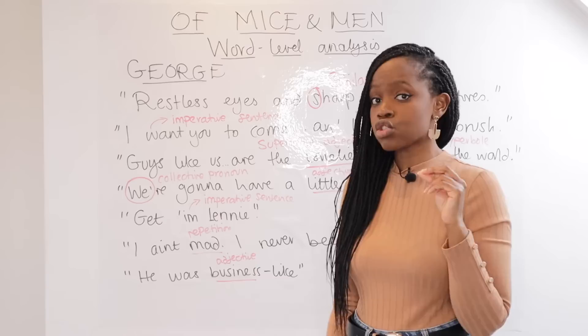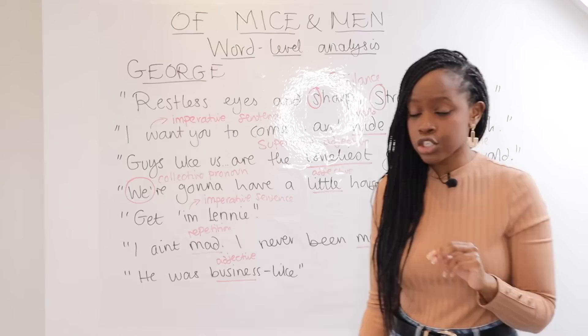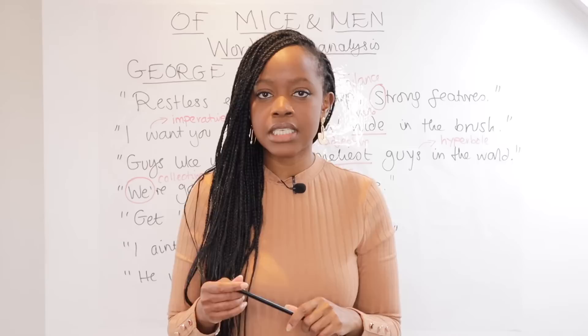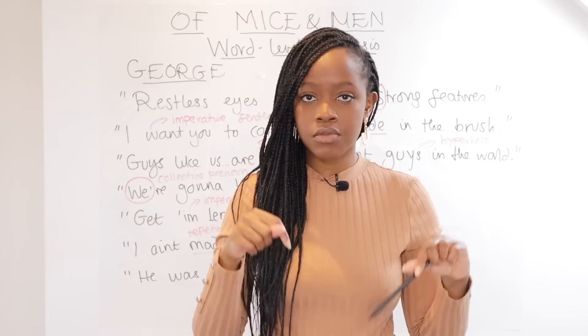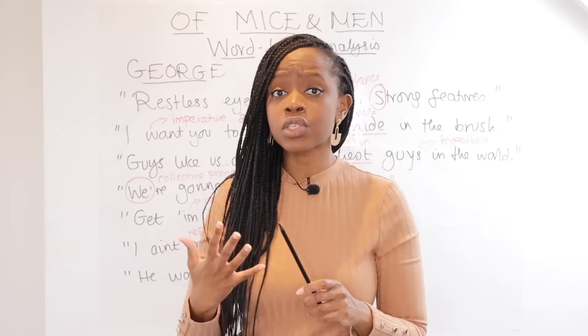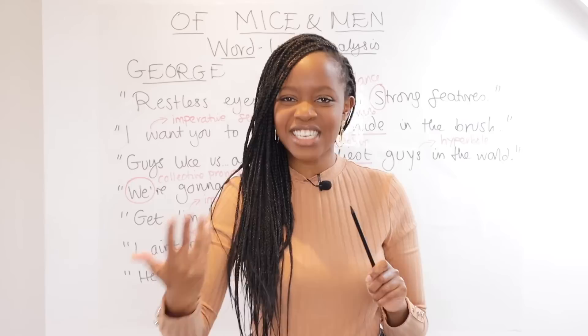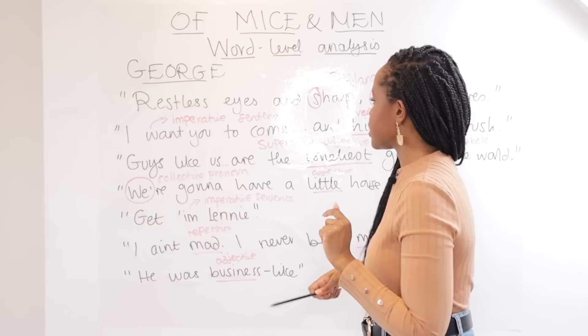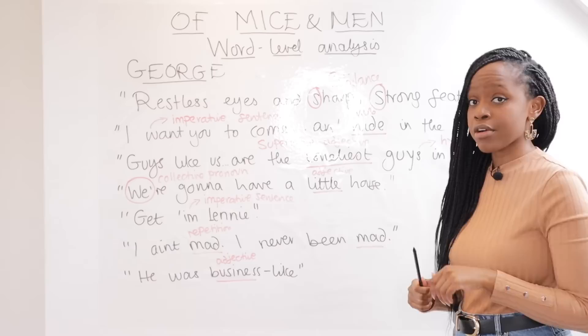The second quotation for George's character comes at the beginning of the first chapter, where he instructs Lenny: 'I want you to come... and hide in the brush.' This is a vital instruction because he's telling Lenny that in case there's any trouble — they've now found work — they come back to the river and hide in the brush. This foreshadows that Lenny might cause trouble, and George doesn't fully trust things will go smoothly. We do realize Lenny gets in trouble, and George ultimately has to kill him.